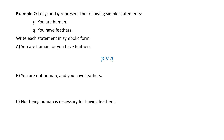'You are not human and you have feathers.' If P is 'you are human,' then we put the tilde (∼) in front of P. 'And' is the upside-down V (∧), and 'you have feathers' is Q. Symbolically, we write ∼P ∧ Q.